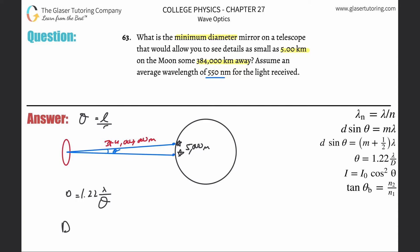So now you can just take 1.22 lambda divided by L over R, which is the same as multiplying by R in the numerator and dividing by L. So there's 1.22 times the wavelength of 550 nanometers, but you need that in meters, so multiply by 10 to the minus 9. The radius here is 384 million meters, and then divide that all by 5,000 meters.